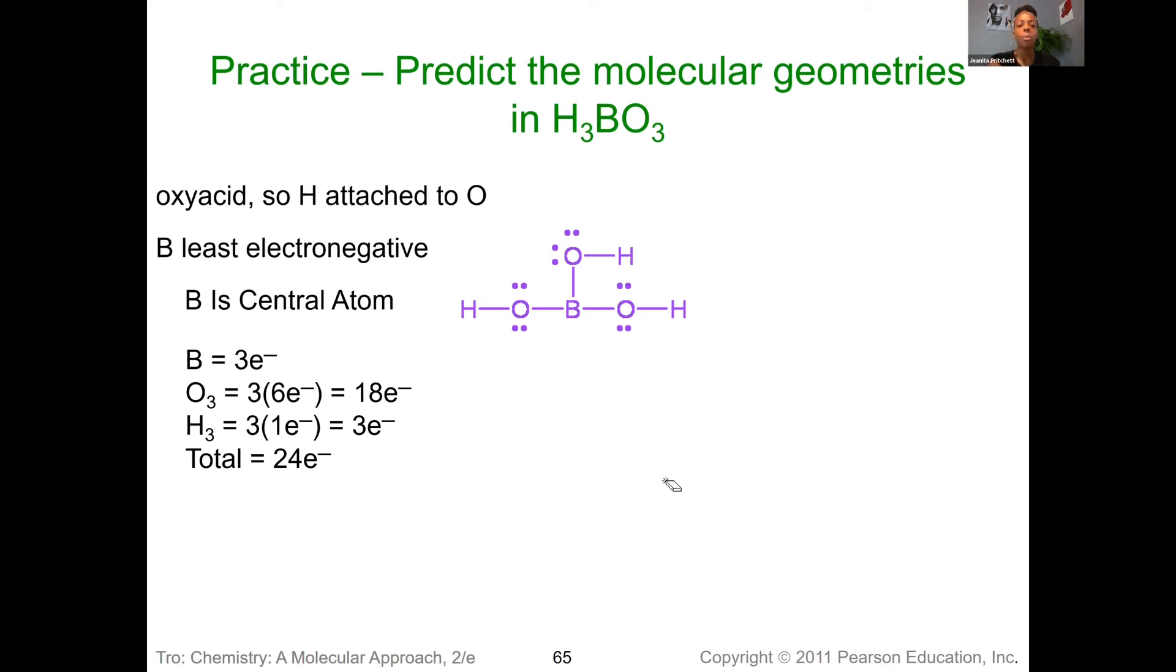Then we notice that we actually have one, two, three, four central atoms. And so you would have a prediction of the geometries for each of these. For that central atom boron, notice there's zero lone pairs, three bonding regions. And so we would say that the electron and the molecular geometry will end up being trigonal planar. No lone pairs, so they're going to be the same.